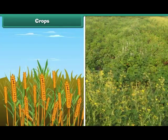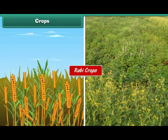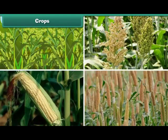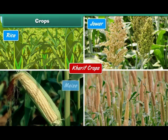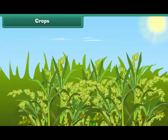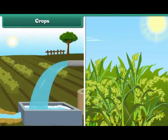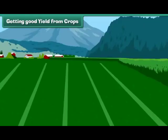The crops which are grown in the winter season are called rabi crops, for example wheat and gram. The crops which are grown in summer are called kharif crops, for example rice, jowar, maize, and bajra. Different types of crops require different amounts of sunlight, water, air and type of soil.